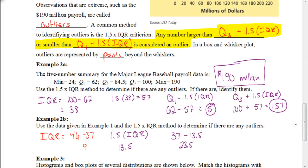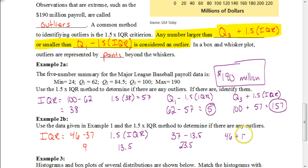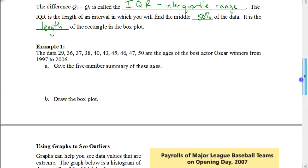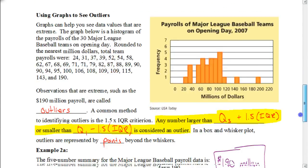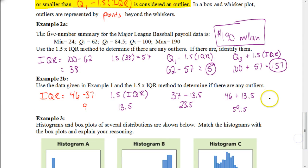Now let's check the upper end. We take Q3, which was 46, and add our 1.5 times IQR value of 13.5, giving us 59.5. Our largest value in the data was 50, which is less than 59.5, so for this example there are no outliers at all.